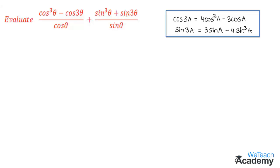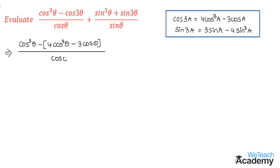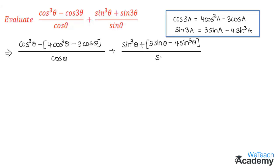By replacing, we get cos³θ minus the value of cos 3θ, which is 4cos³θ minus 3cos θ, divided by cos θ, plus sin³θ plus the value of sin 3θ, which is 3sin θ minus 4sin³θ, divided by sin θ. Now let us simplify.